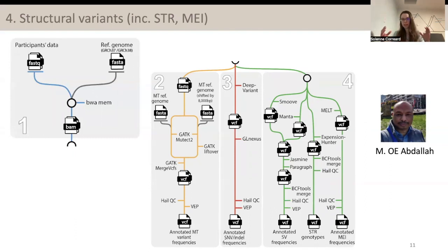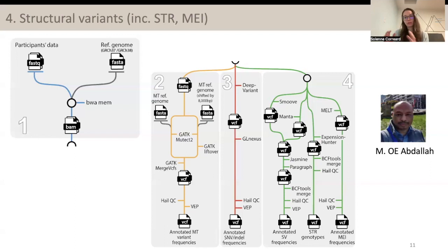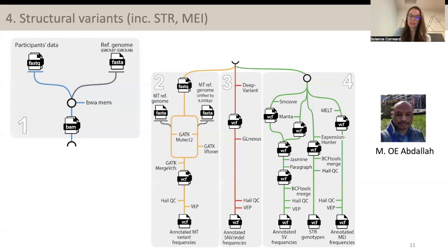All the variant calling part is very similar to other pipelines such as NF-Core rare disease or NF-Core SAREK. What is really specific about this pipeline is the steps at the bottom: the sample quality control, variant quality control, allele frequency calculation, and also sex imputation. The reason for that is the quality control is performed differently if you have just one individual or a trio versus if you have a population. All of this is performed within HAIL, which is a Python-based analysis tool that is also used by GNOMAD and some other variant catalog pipelines. It performs quality control as well as the variant frequency calculation, and then the variants are annotated using VEP.